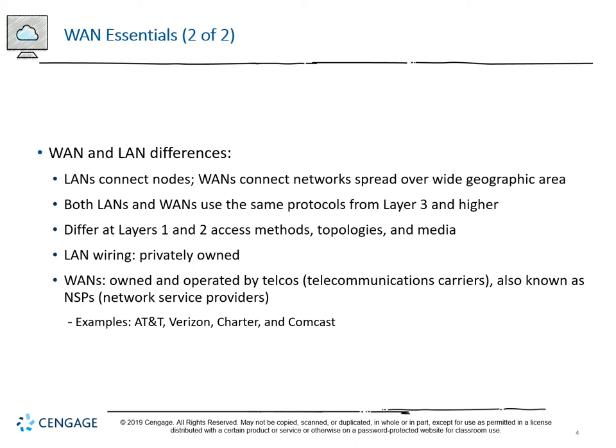NSPs deal with the larger tier 1 ISP infrastructure - AT&T, Verizon, Charter, Comcast, Adelphia before they went down - those were all NSPs. People who are tier 2 and tier 3 ISPs would actually lease access information from the NSPs.